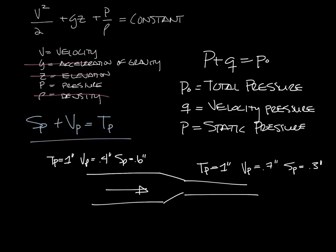So this is Bernoulli's in action. As the diameter of the ductwork decreases, the velocity increases. And if you remember that very first equation, if velocity increases, static pressure decreases. If you look at it in the other direction — going from the small end to the larger end — you would go from 0.3 static pressure to 0.6 static pressure. And if you remember from a previous podcast, this is known as static regain.